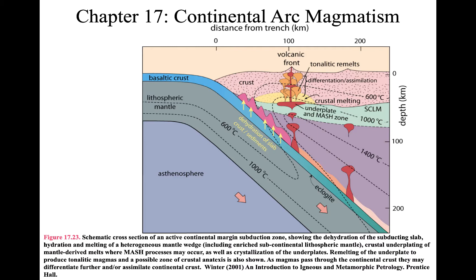So this pink crust, where it says tonalitic remelts, differentiation assimilation, all of those magmas are wet, whereas over here the basaltic crust is dry. All the melting that happens to create this blue material is dry. So this is wet, and this is dry, and this is wet because of the water being added here.